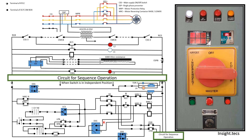On the RTCC panel we have an independent, follower, and master switch. When remote is selected and independent is selected, the operation of this transformer itself for tap changing will be done independently. When master is selected, after the operation of this transformer, the other transformers' steps will also be changed subsequently. If follower is selected, whenever the master transformer's tap changing is done, this follower transformer will also automatically change its step position.